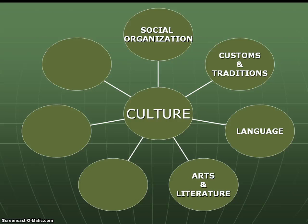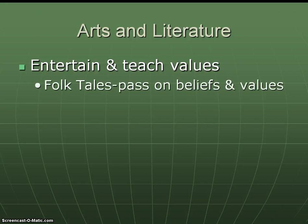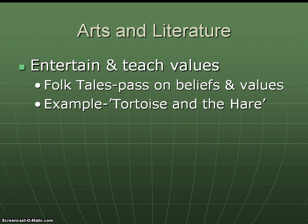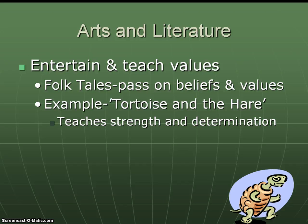Up next is art and literature. The purpose of art and literature is not just to entertain — like reading a book or seeing a movie — but also oftentimes to teach values. For example, folktales are ways for a culture to pass on their beliefs and values. You probably know folktales like The Three Little Pigs or The Boy Who Cried Wolf. Another example is the tortoise and the hare, where the hare takes a nap because he thinks he'll win, but the tortoise, slow and steady, wins the race. This teaches that strength and determination are what a culture values, not laziness.